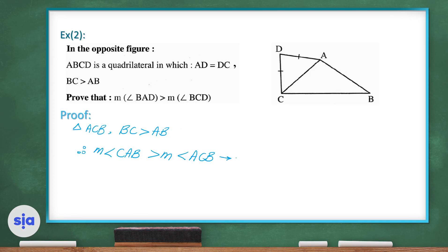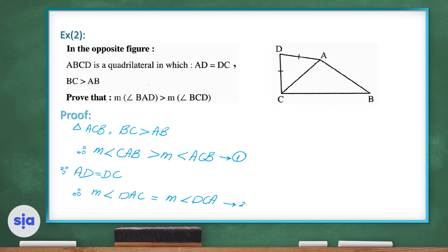Since AD equals DC (given), therefore the measure of angle DAC is equal to the measure of angle DCA — call this inequality number 2.